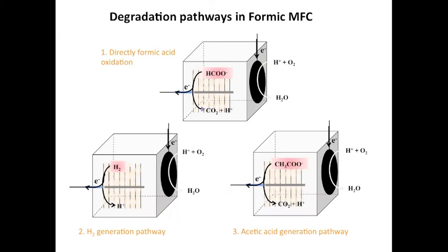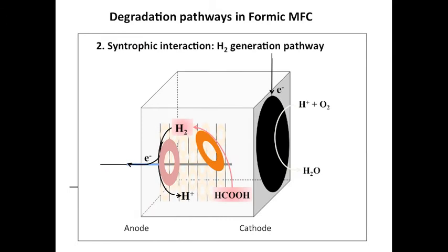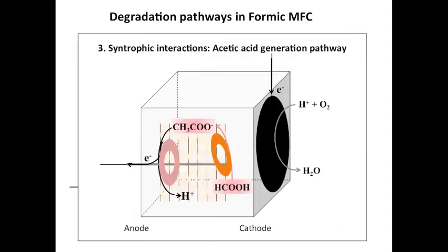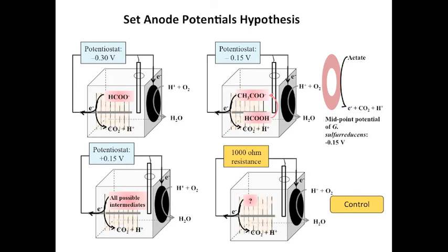Two syntrophic processes could lead to current generation using formic acid: hydrogen generation and acetogenesis. The hydrogen generation pathway involves formic acid being used by Perococcus to generate hydrogen, which is then used by Geobacter to generate current. The second possible syntrophic interaction is based on generation of acetic acid. Formic acid can be converted to acetate by bacteria such as Acetobacterium, and acetic acid can then be used by Geobacter sulfurreducens. This syntrophic relationship is more thermodynamically favorable and results in acetate, which is a preferred substrate for Geobacter sulfurreducens.